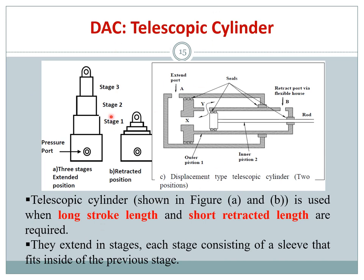The telescopic cylinder is designed like a telescope — it is a multi-stage cylinder. You have a pressure port and an exhaust port. Looking at the cross section, there are three compartments with pistons arranged so that each stage fits inside the previous one, similar to telescope stages.